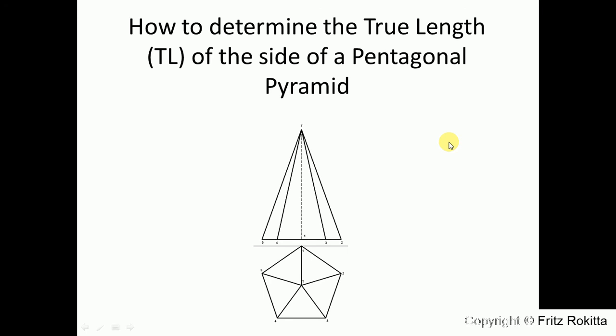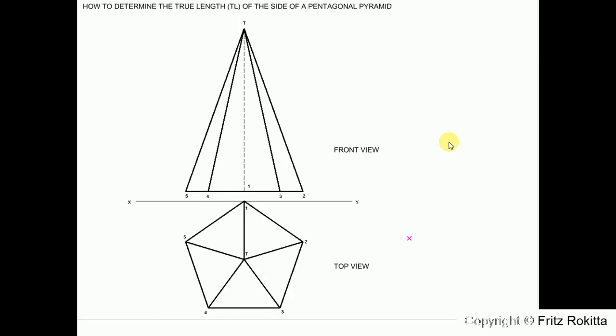Good day! In this tutorial I'm going to show you how to determine the true length of a pentagonal pyramid. Here we have the front view of a pentagonal pyramid and the top view of a pentagonal pyramid. The two views are separated with an XY line. This drawing is given in first angle orthographic projection.